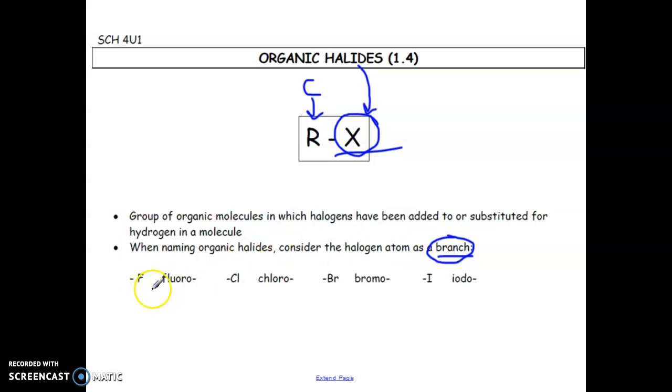So the names when you have a fluorine is fluoro, chlorine is chloro, bromine is bromo, and iodine is iodo.